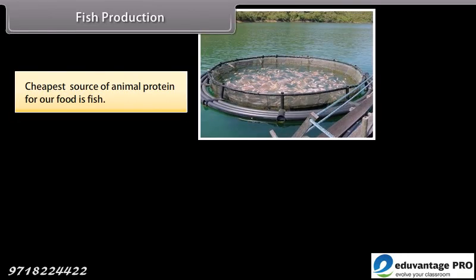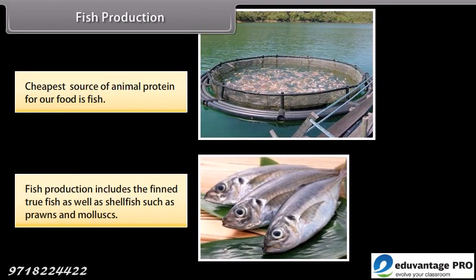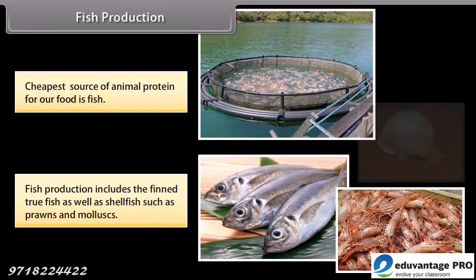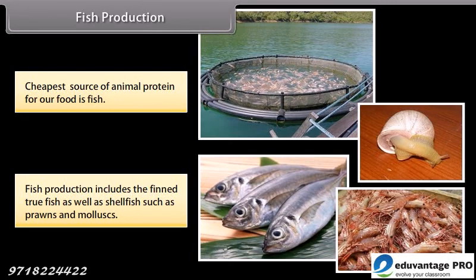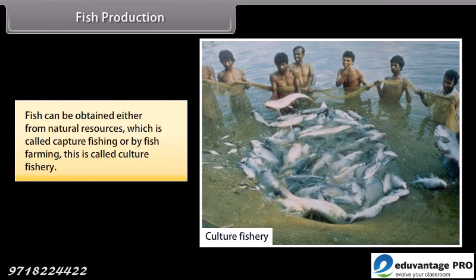Fish production. The cheapest source of animal protein for our food is fish. Fish production includes true finfish as well as shellfish such as prawns and mollusks. Fish can be obtained either from natural resources, which is called capture fishing, or by fish farming, which is called culture fishery.